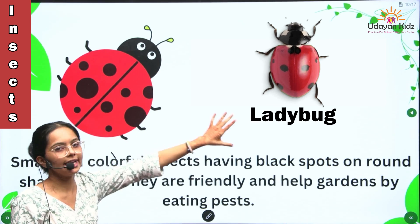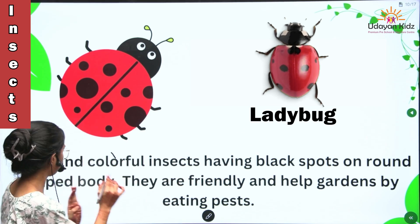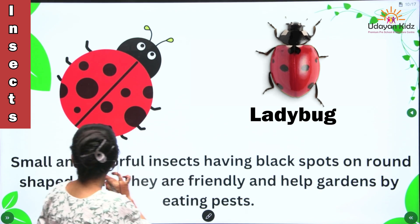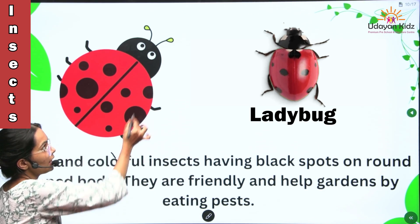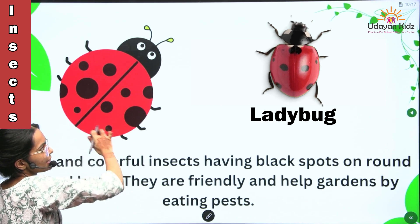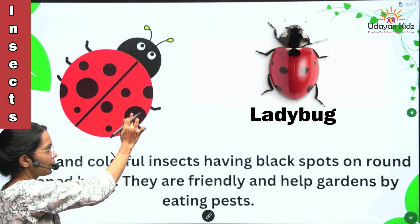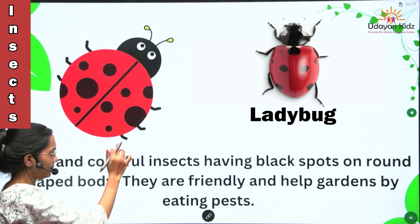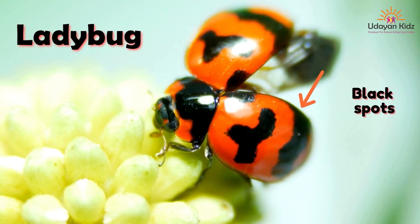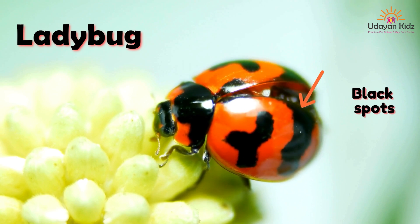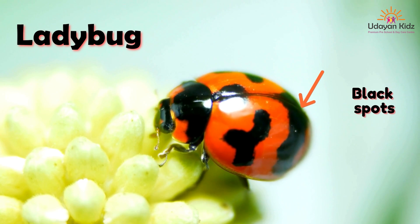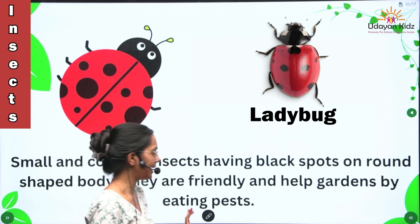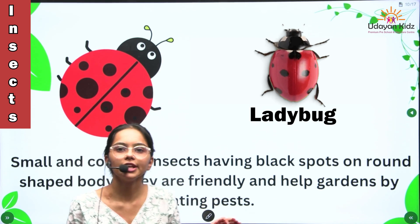First one is ladybug. Small and colorful insects having black spots on round shaped body. Ladybug's shape is round and has black spots. They are friendly and help the garden by eating pests. And they are very friendly.